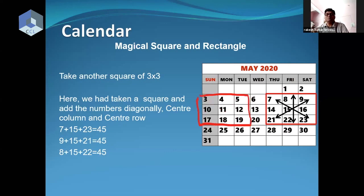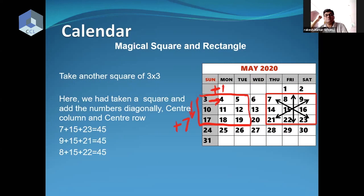What happens in a calendar? The very interesting thing is: if you move right, you go plus one. If you go down, you go plus seven. That is how the calendar moves — right is plus one, down is plus seven. Going right adds one, going left subtracts one. Going down adds seven, going up subtracts seven.